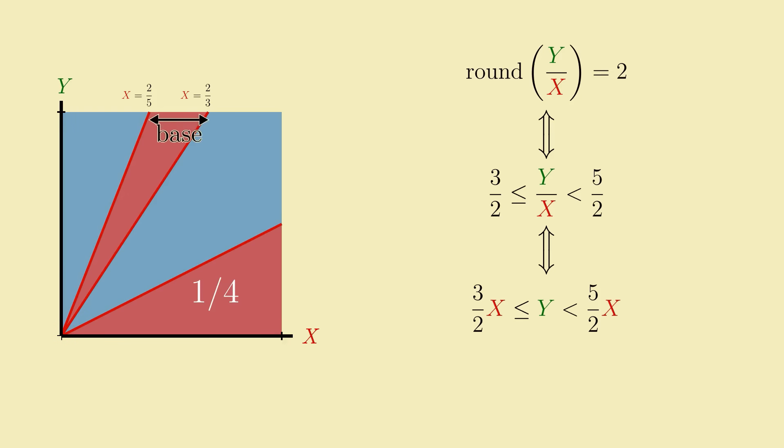If we treat the top of this triangle as its base, then we can compute its area as 1 half times its height of 1, times its base length of 2 thirds minus 2 fifths, which results in an area of 2 fifteenths. But actually, it'll be more helpful for figuring out our final answer if we unsimplify it back into its original form in terms of the x values 2 thirds and 2 fifths.